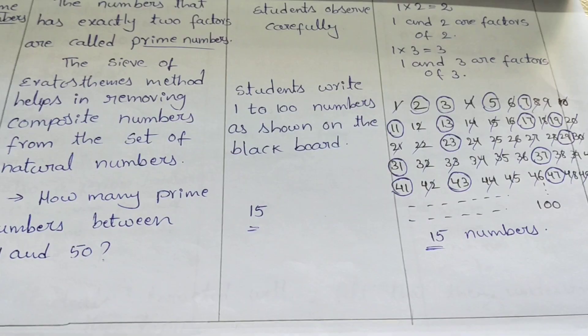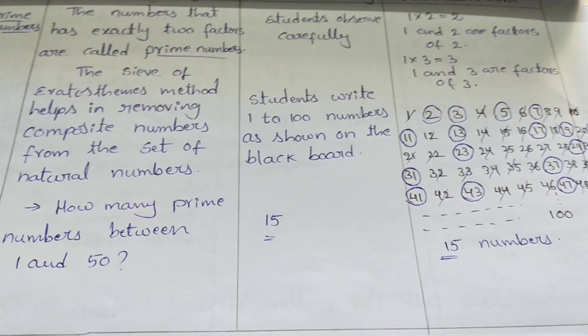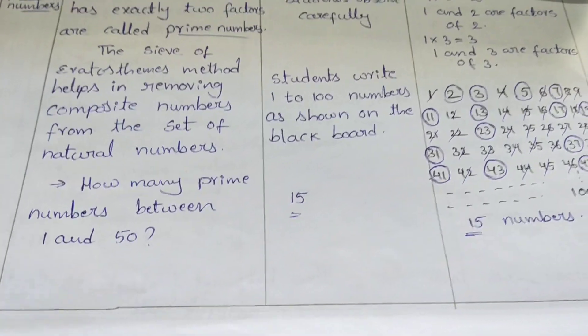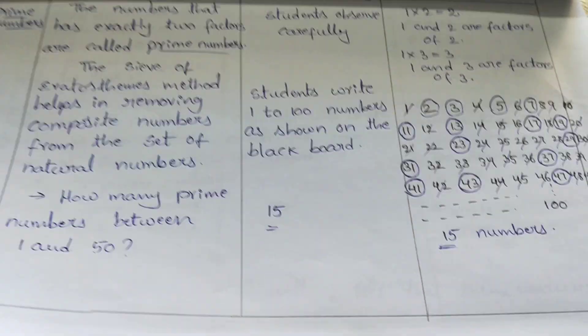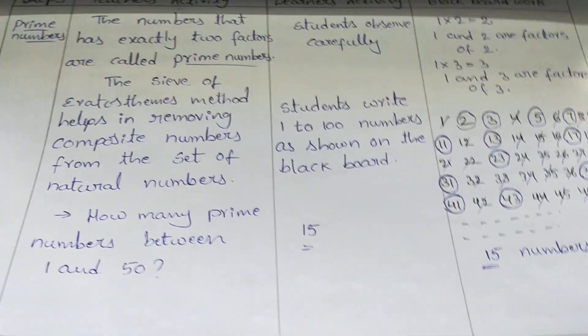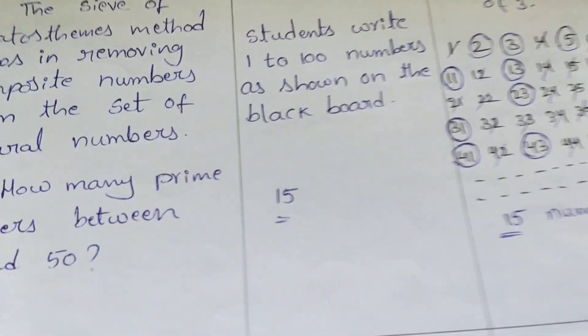Students write numbers from one to one hundred, and they will come to know. They will circle which is having only two factors, and they will cross out which is having more than two factors.